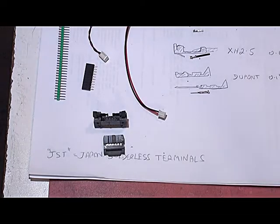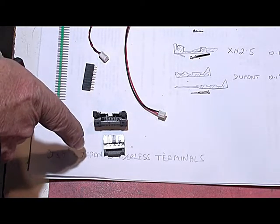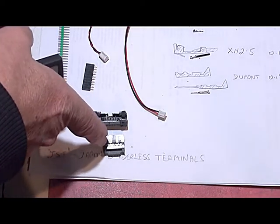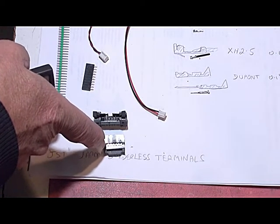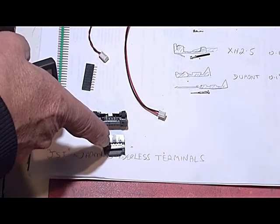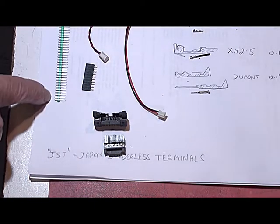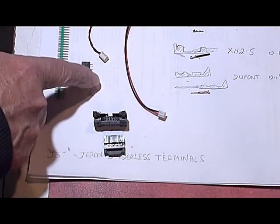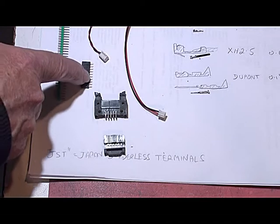Here are some more connectors. This one here is 0.1 inch spacing, two rows. It's a displacement type connector where a ribbon cable is put inside the plug and then compressed onto the ribbon and the connections are made by displacing the plastic. Over here we have a typical header strip and here is the female version of that which you'll often see on circuit boards such as the Arduino.